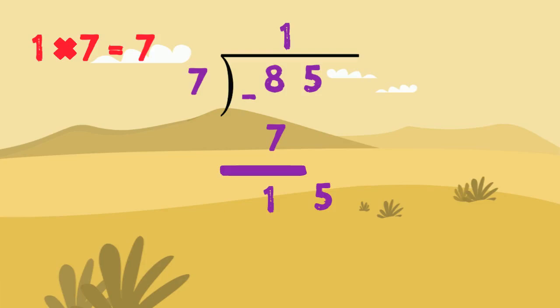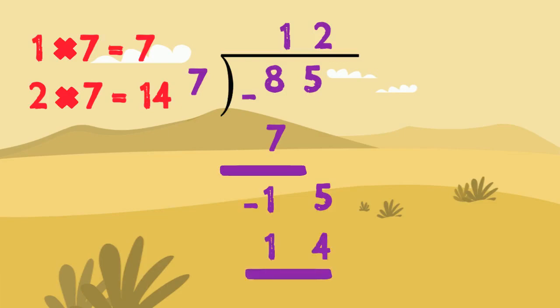Now we need to see how many 7s are in 15. From the multiplication table: 1 times 7 is 7 — not quite right. 2 times 7 is 14, which is very close to 15. So 2 is our next answer, going right on top. We write the answer to 2 times 7, which is 14, right under 15 and subtract. 15 take away 14 equals 1, so our remainder is 1. The answer is 12 with a remainder of 1.